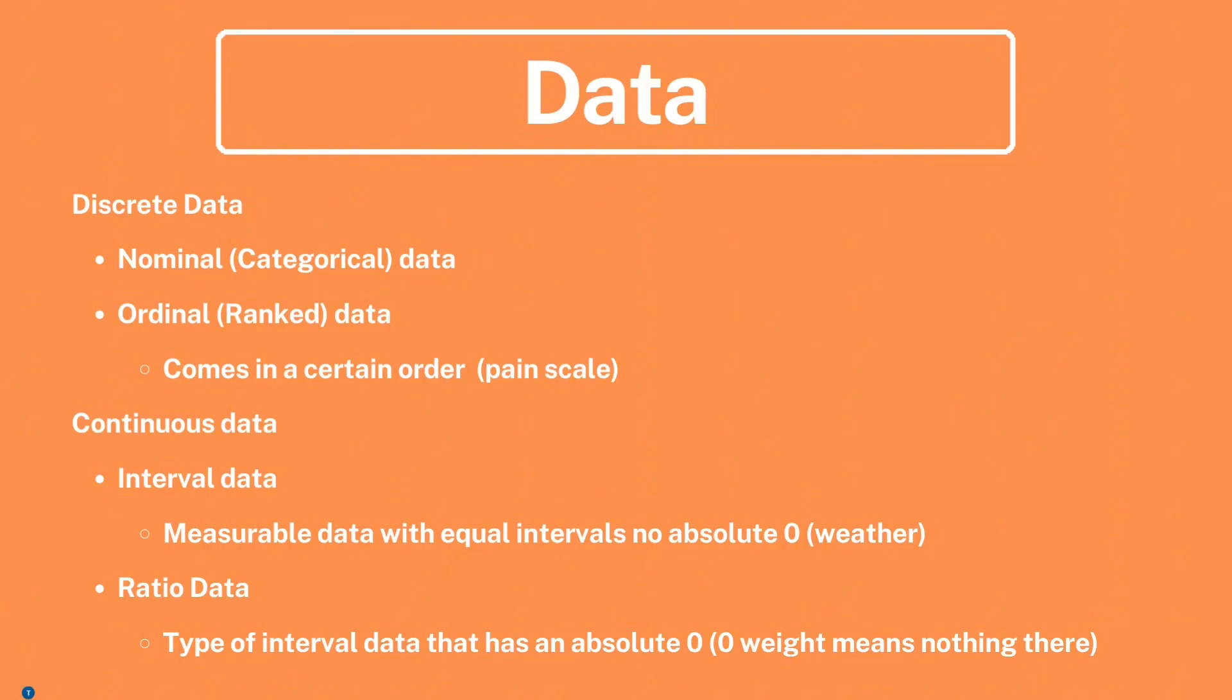Moving on to continuous data, we find two primary categories: interval data and ratio data. Interval data is measurable data with equal intervals between values, but it lacks an absolute zero. An excellent example of this is weather temperature, where the difference between 20 Celsius and 30 Celsius is the same as between 30 Celsius and 40 Celsius, but zero Celsius does not represent the absence of temperature.